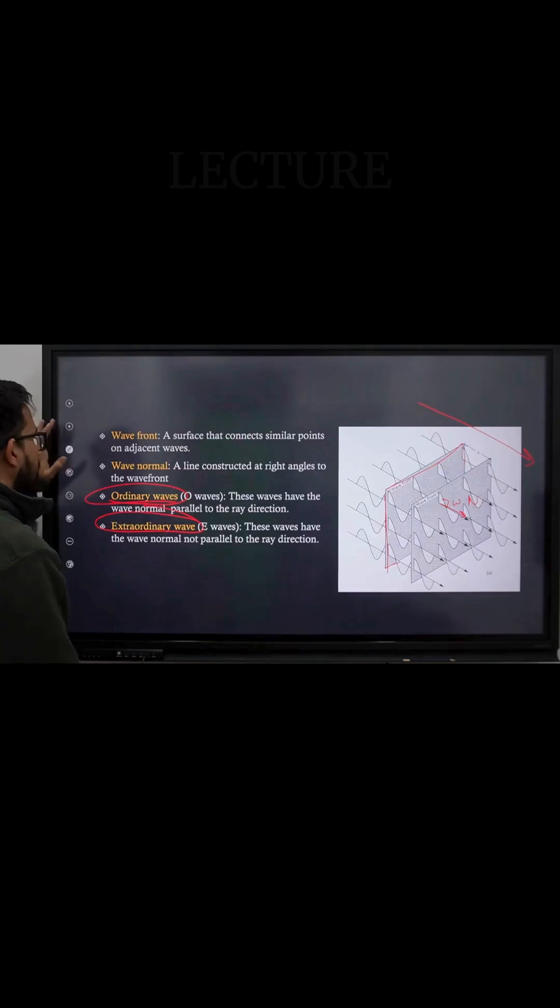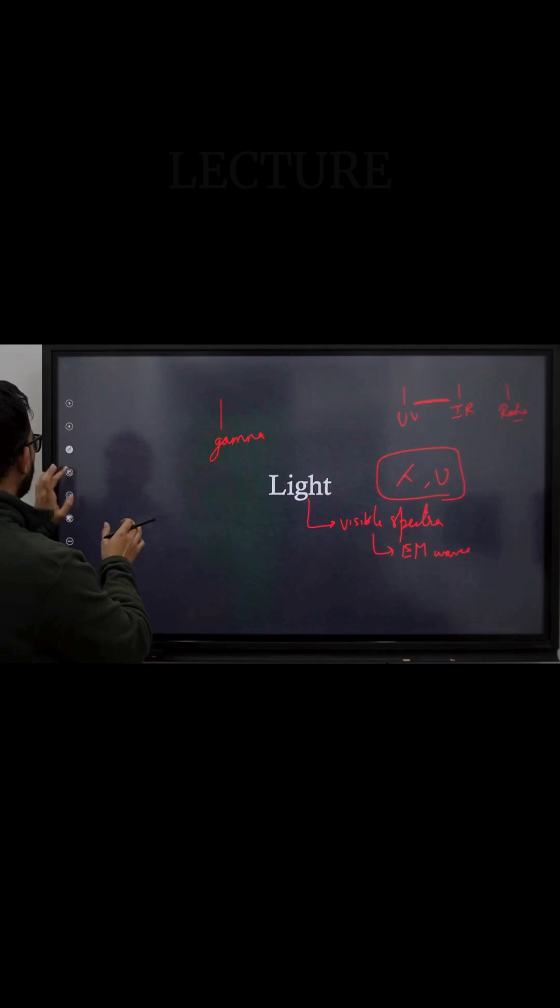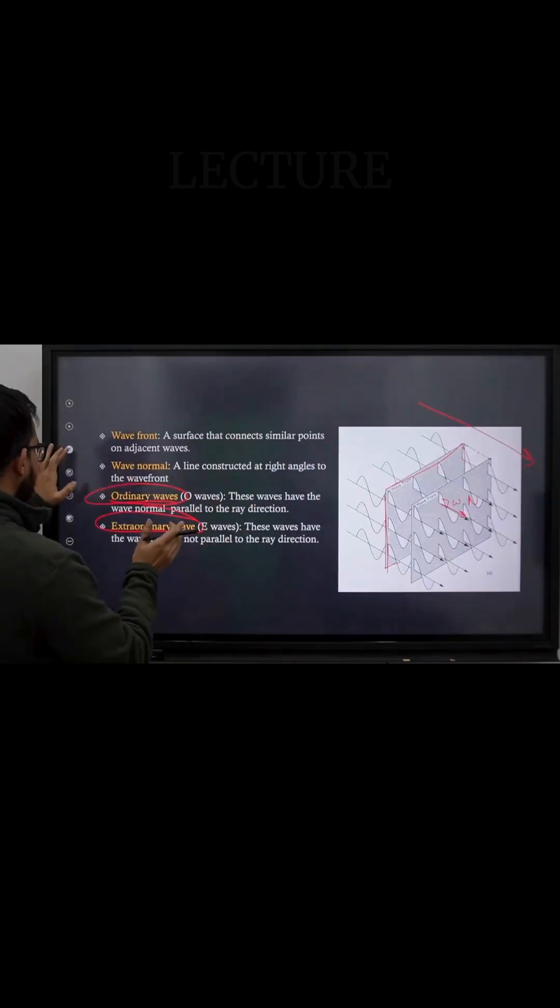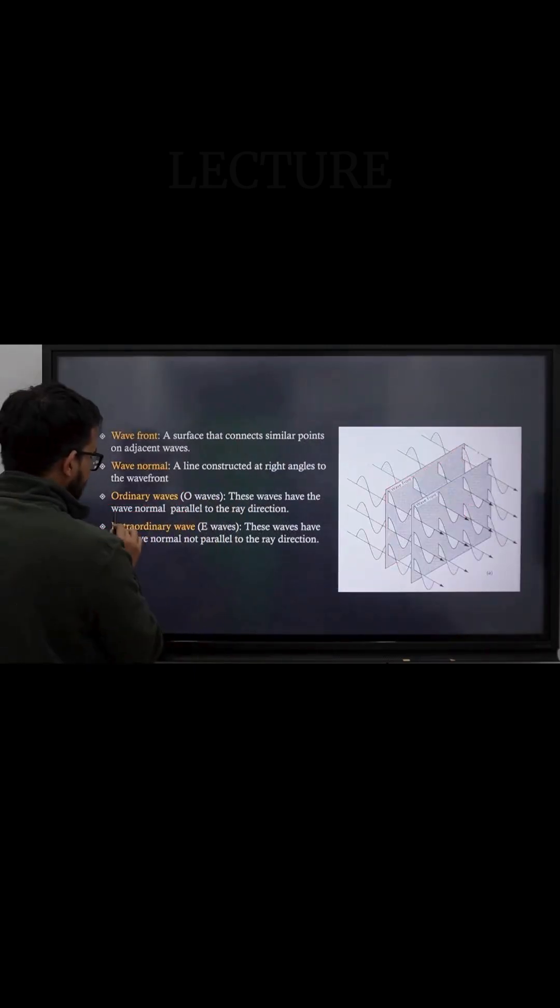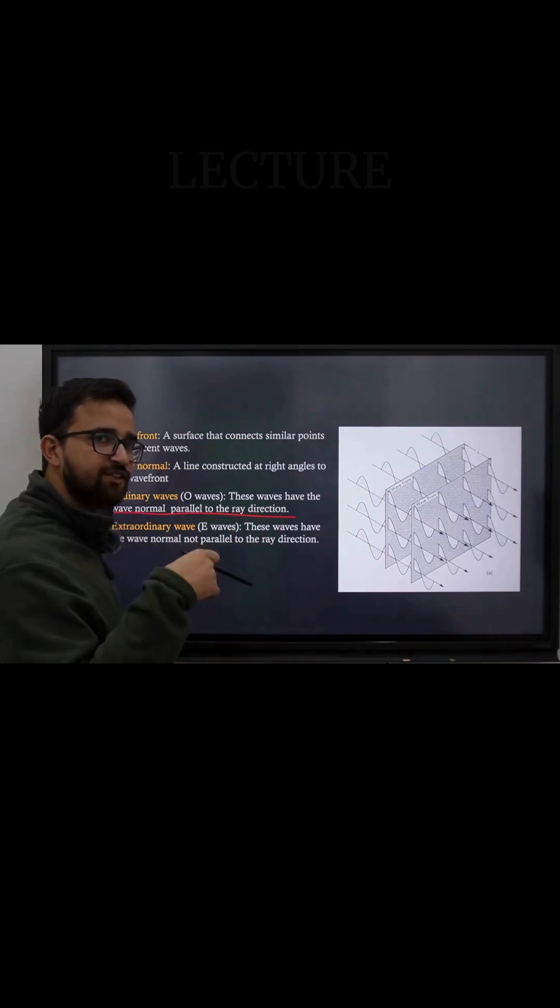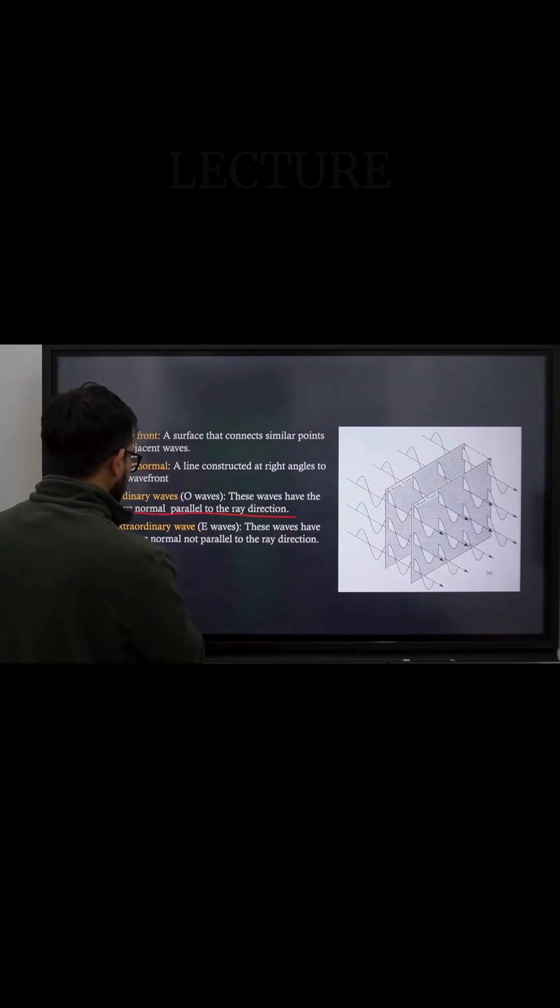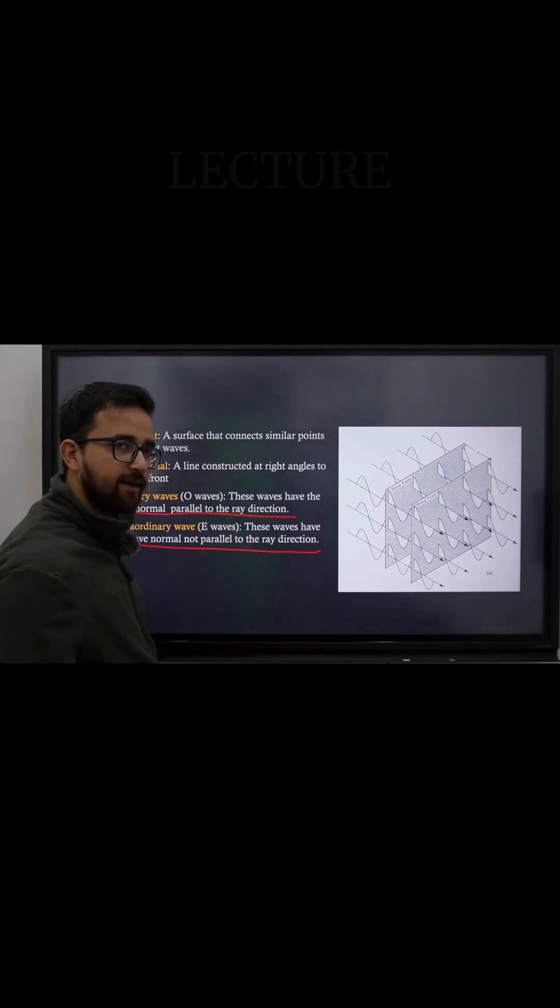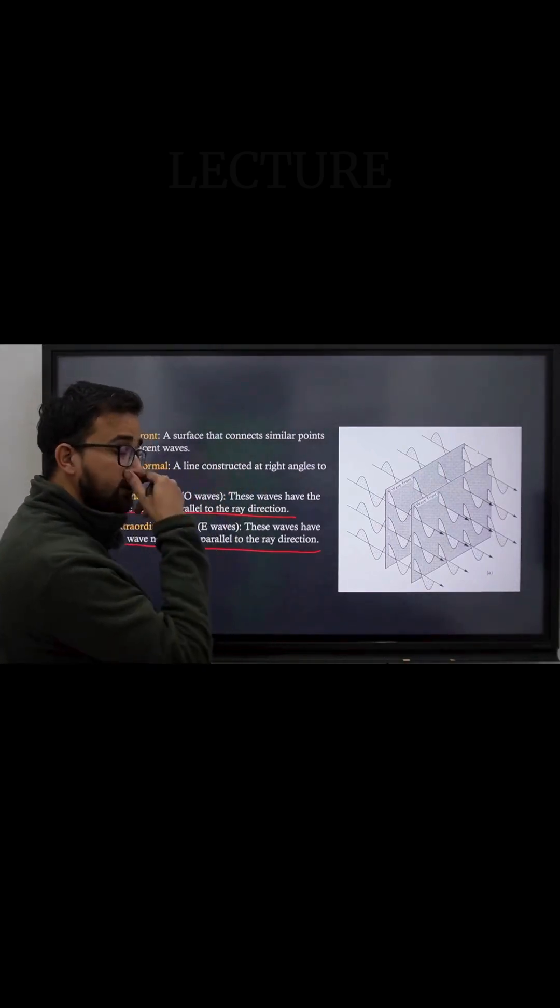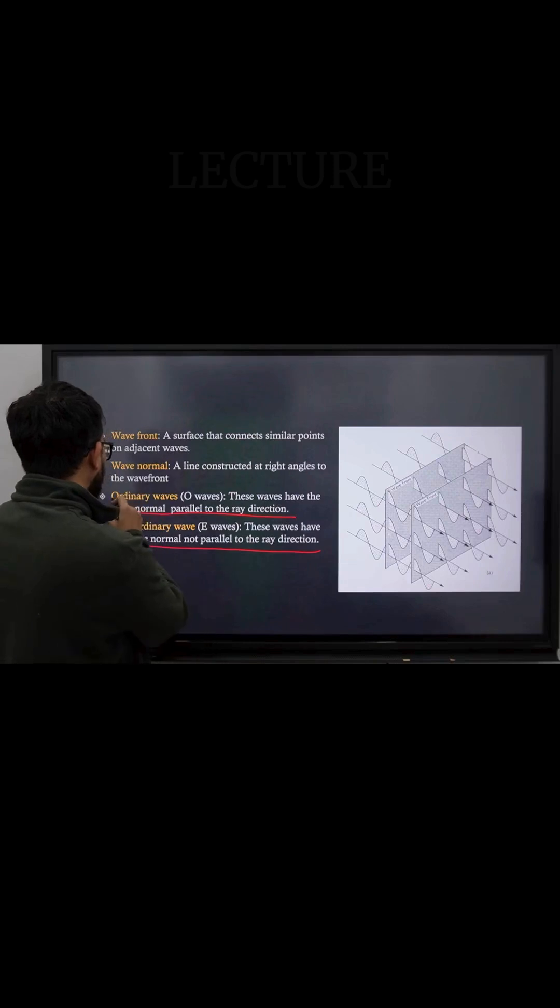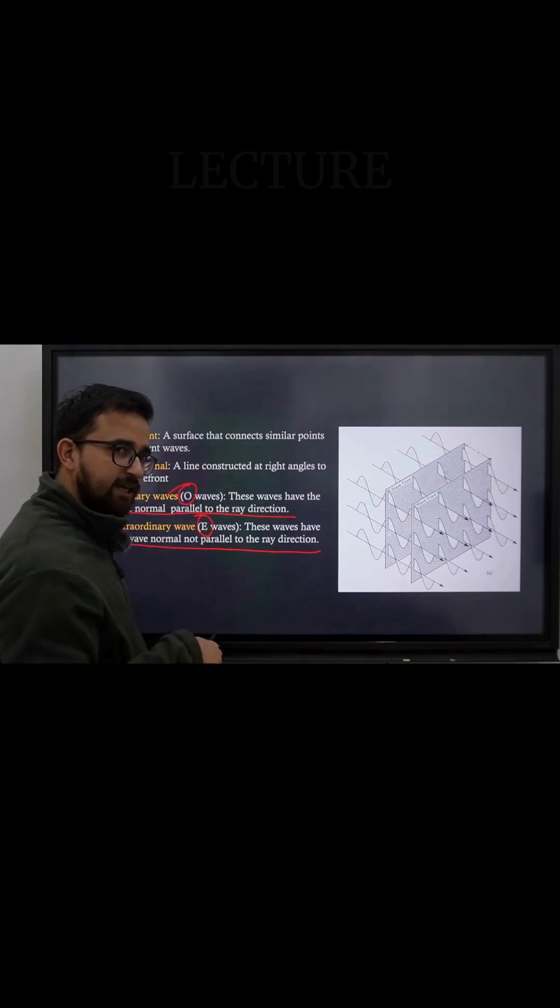This is where the distinction begins between an ordinary wave and an extraordinary wave. An ordinary wave, as the name suggests, has the wave normal parallel to the ray direction. An extraordinary wave is doing something extraordinary - the wave normal is not parallel to the ray direction. These will come later in the optical section as well. Ordinary wave is known as the O wave, extraordinary wave is known as the E wave.